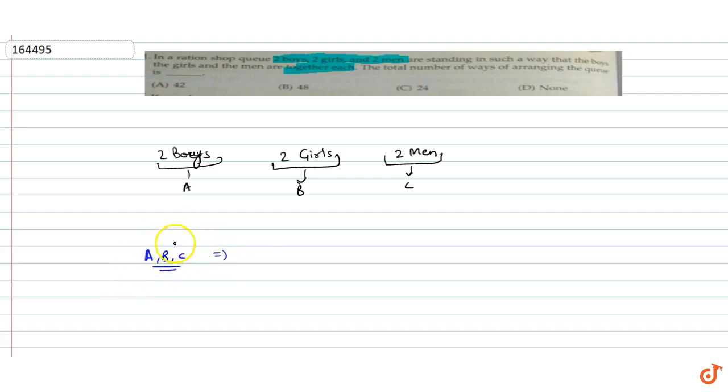How many ways of arranging the queue? Three units, so we will arrange them in 3 factorial ways. That is 3 × 2 × 1, which is 6 ways.